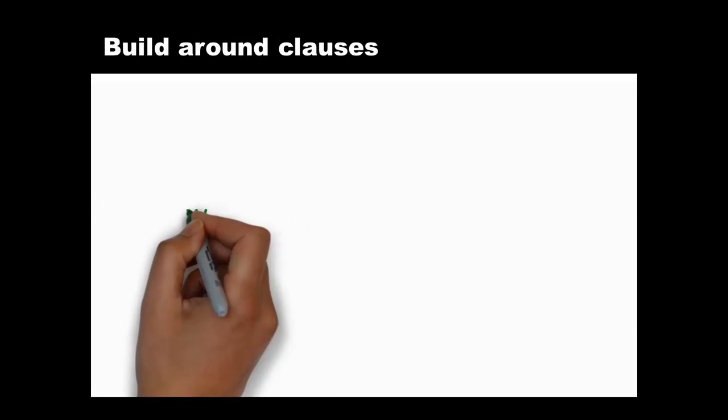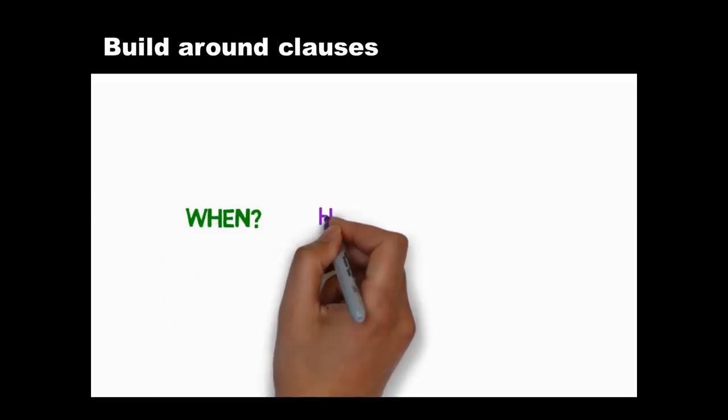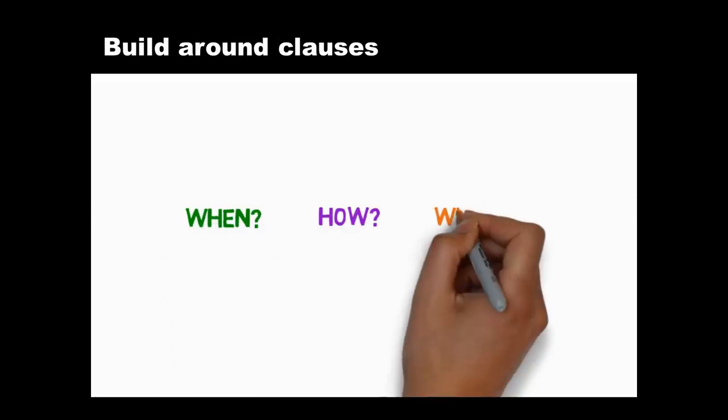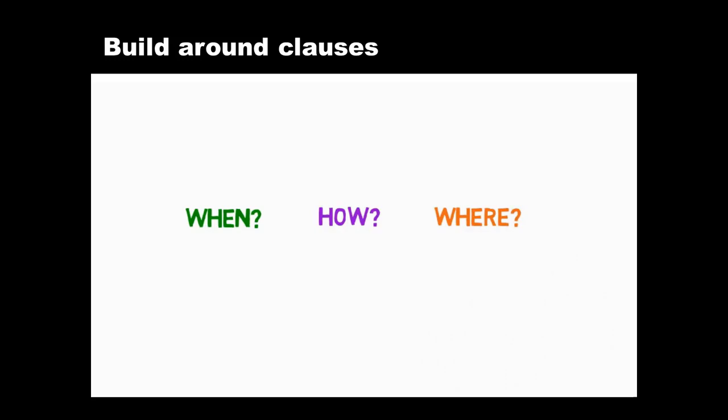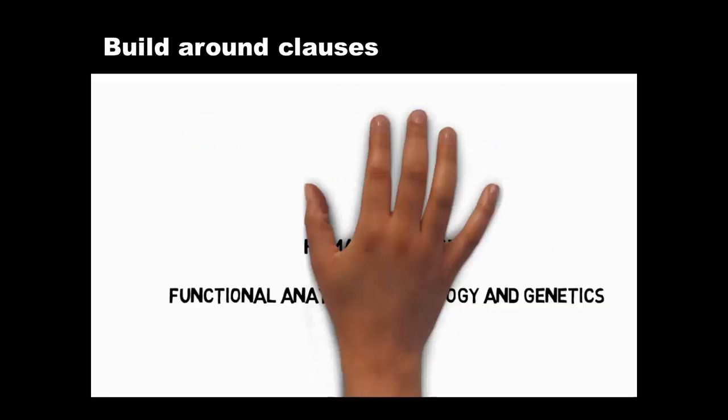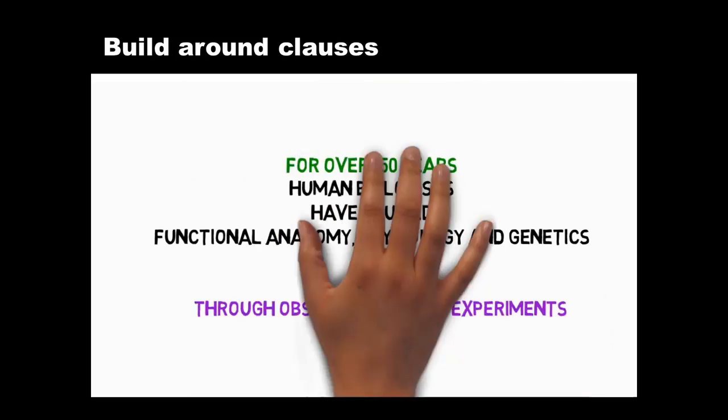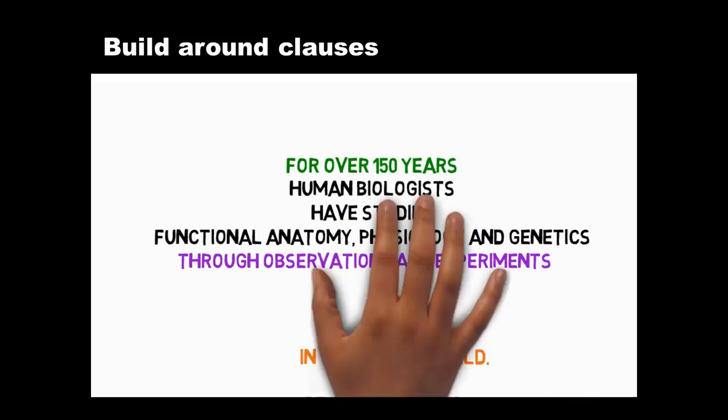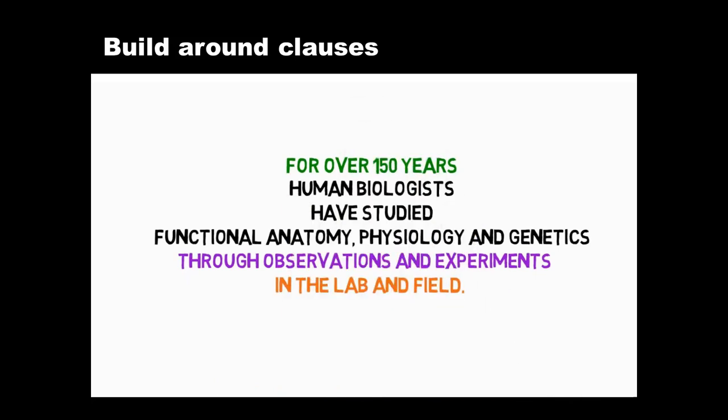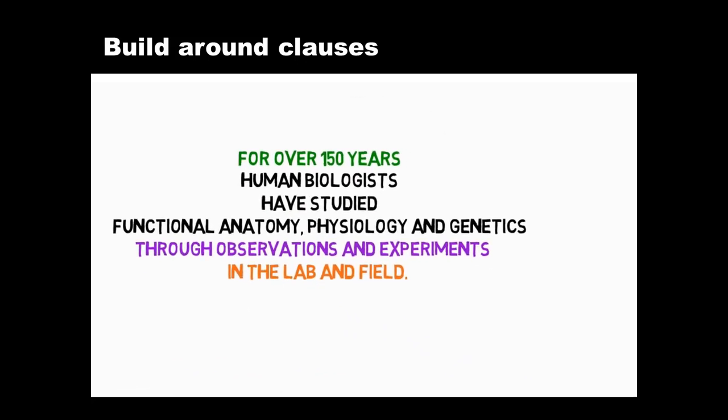You can also make your ideas clearer by telling the reader when, how, and where events are taking place. Ideally add this information around clauses. You can put some of it, for example, before the subject, and some of it after the object as well. In this way your subject, verb, and object are still close together and your ideas are easy to read.